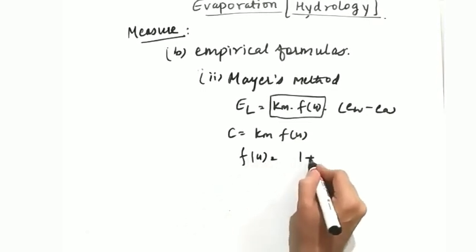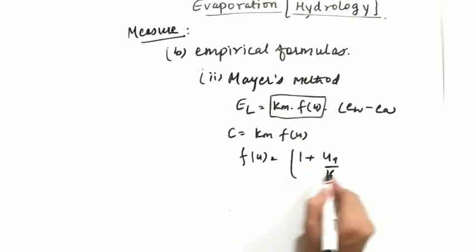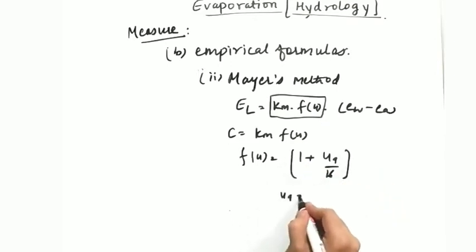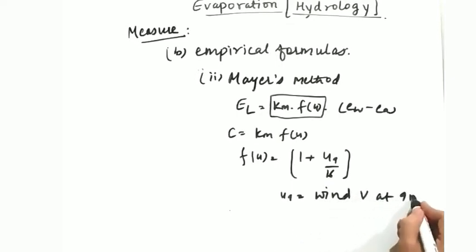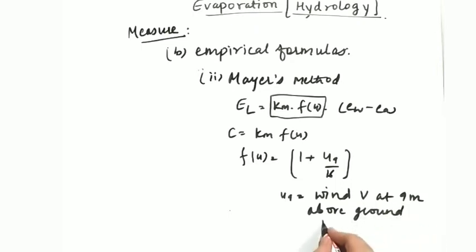What is U9? U9 is the wind velocity at 9 meters above ground in kilometer per hour.